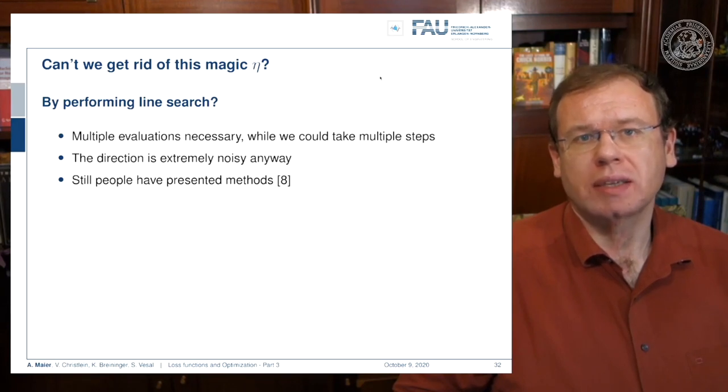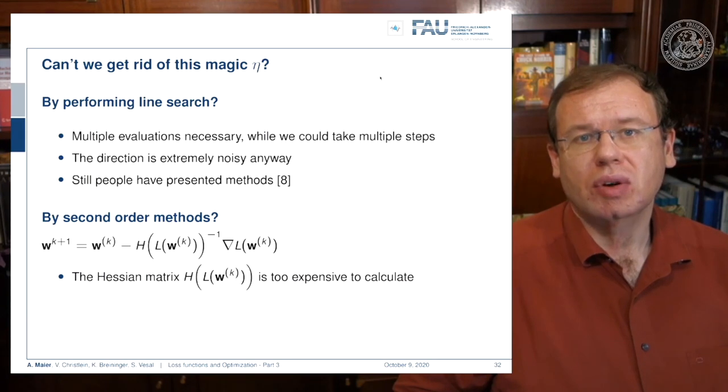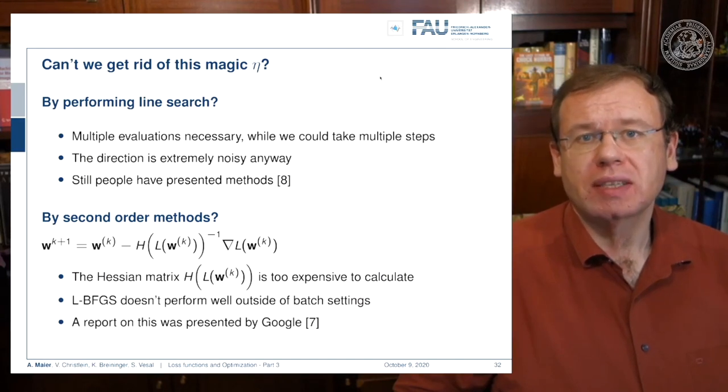Then people have suggested second-order methods. If you look into second-order methods you need to compute the Hessian matrix, and this is typically very expensive to calculate. So far we have not seen that too often. There are LBFGS methods but they typically don't perform very well if you're operating outside of the batch setting—if you work with many batches they are not that great. There's a report on that by Google that you can find in reference number seven.